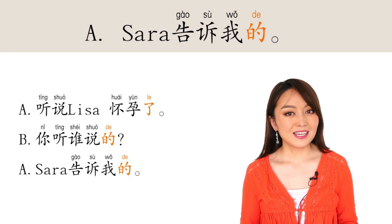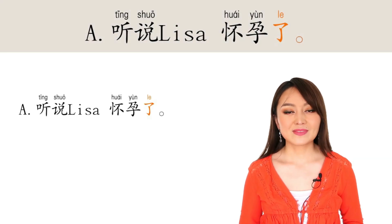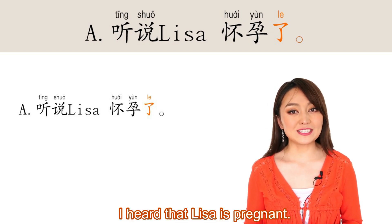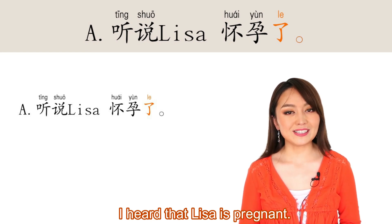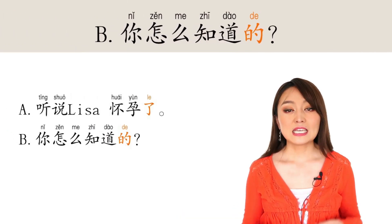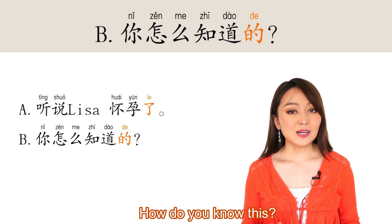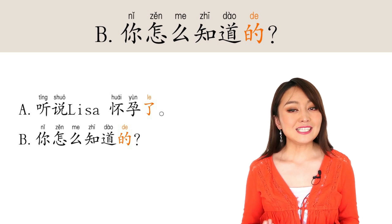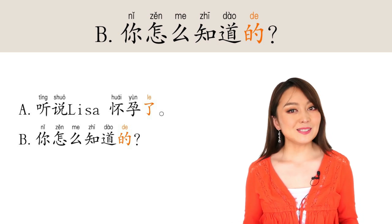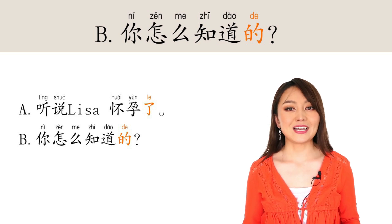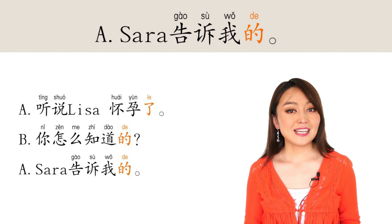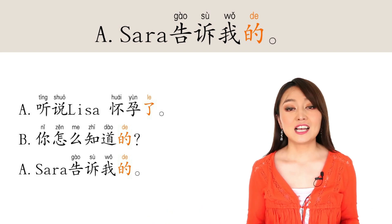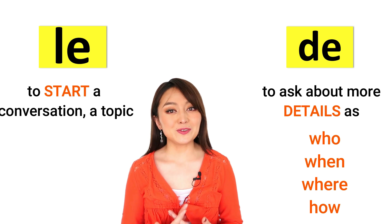The conversation can also go this way. A says: 听说 Lisa 怀孕了 — I heard that Lisa is pregnant. And B asks: 你怎么知道的? — How do you know that? Now the question word is 怎么 — how — so we use 得. And the answer is the same: Sarah 告诉我的 — Sarah told me. So: 了 to start the conversation, and 得 to continue the conversation to tell more details.